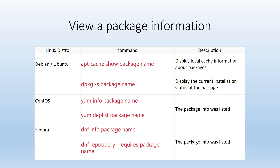Before deciding which package to install, we often need to check the detailed description of the package. The package documentation usually includes metadata such as the package name, version number, and dependency list, which can be viewed using the following command.